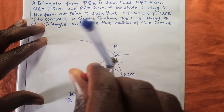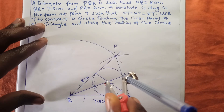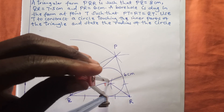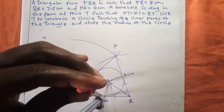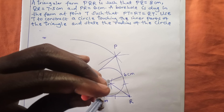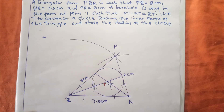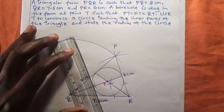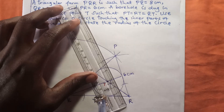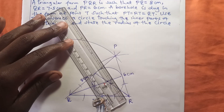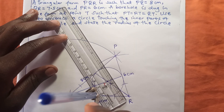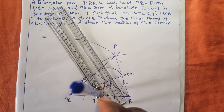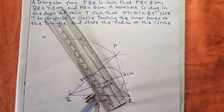We have answered the first part of the question. The next thing is to take the length I used to construct this circle and use the ruler to measure it. The length is two centimeters. So that is going to be our radius.